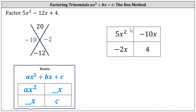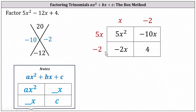And once again, we determine the greatest common factor in each column and each row. Looking at the first column, we have 5x squared and negative 2x — the greatest common factor is x. In the second column, we have negative 10x and 4 — the greatest common factor is 2, but because the first term in the second column is negative, we use negative 2. Moving to the first row, we have 5x squared and negative 10x — the greatest common factor is 5x. In the second row, we have negative 2x and 4 — the greatest common factor is 2, but again because the first term in row 2 is negative, we use negative 2. This indicates the factors of 5x squared minus 12x plus 4 are x minus 2 and 5x minus 2.